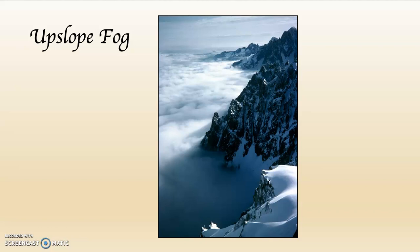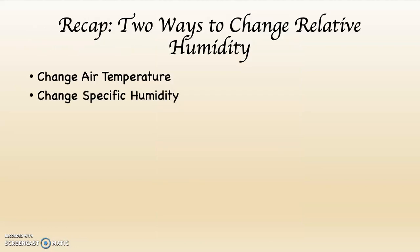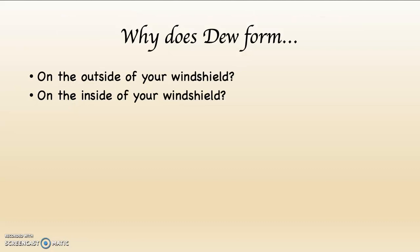By about 10 or 11 o'clock, the ground started to get warm, the air began to rise, and it began to create this cloud along the sides of the mountain — which is upslope fog. By noon or 2 o'clock, you can't see the mountains at all; it gets completely covered in. This is pretty much a daily occurrence that the air will rise up along the slopes of the mountains, condense, and shroud the mountains in clouds. So there are two ways to change relative humidity: change air temperature and change specific humidity.